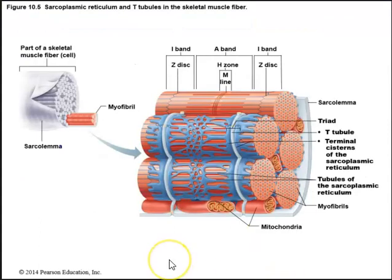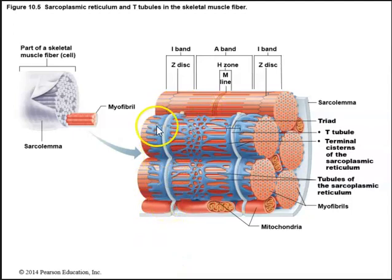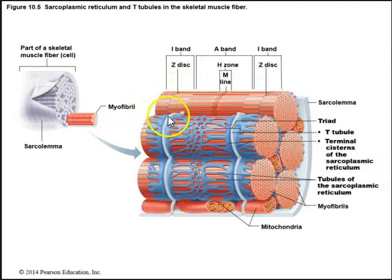T-tubules are deep invaginations of the sarcolemma. The triad is the T-tubule flanked by two terminal cisterns. When the electrical signal from the nervous system arrives for muscle contraction, it travels down the T-tubules to stimulate the release of calcium ions from the sarcoplasmic reticulum, allowing for muscle contraction.